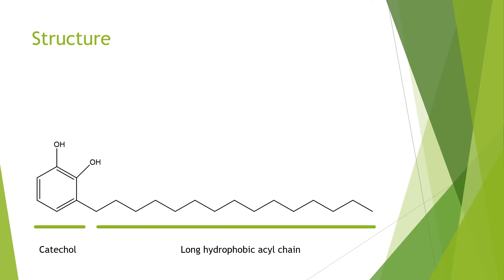Looking at the general structure on the bottom left, we have that catechol ring and the R-group is actually a long hydrophobic alkyl chain. Urushiol is not just one compound — it's actually a family of related compounds with different modifications. One variation is different levels of unsaturation, and the long hydrophobic alkyl chain can contain either 15 or 17 carbons. Interestingly, recent evidence suggests these are spatially separated: 15-carbon chain urushiols are found more in resin ducts of poison ivy, whereas 17-carbon chains are found more in the cortex and vascular tissue, which could indicate some biosynthetic or functional separation.